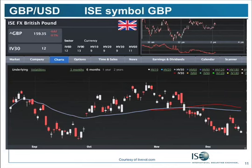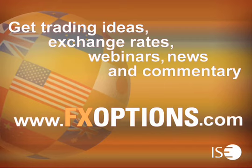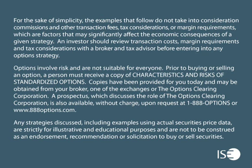Here's the Great British pound against the U.S. dollar — the dollar has actually been rallying in the daily chart, and that symbol is GBP. The Australian symbol I didn't mention is AUM. Thank you for participating in this week's session. Please join us again next week for trading ideas, exchange rates, webinars, news, and commentary — visit www.fxoptions.com. ISE FX Options can be easily traded through all options-enabled brokerage accounts. These exchange-listed securities are cash-settled in U.S. dollars and have a European-style exercise. For more information, visit www.fxoptions.com.